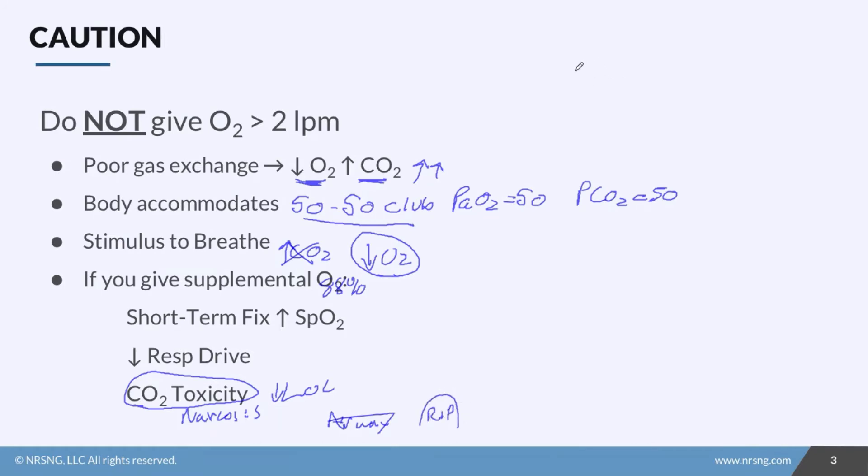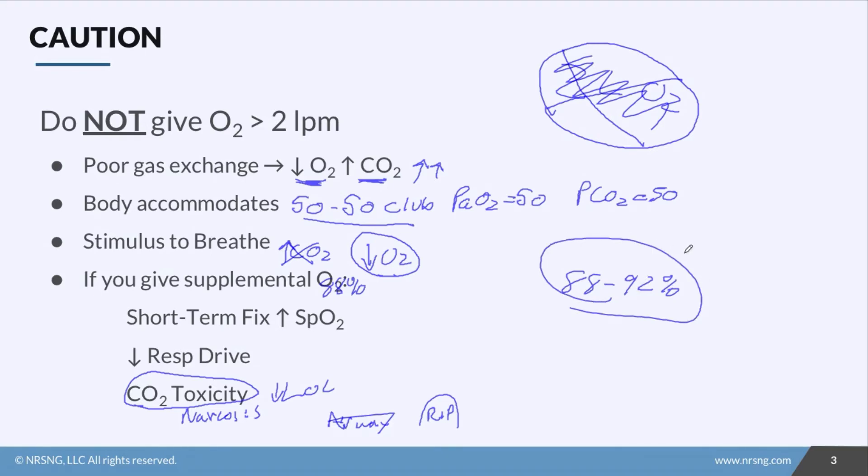Now here at NRSNG we love you guys. We want to see you advocating for these patients and keeping them out of harm's way. So do not give more than two liters of O2 to this patient without talking to the provider. In fact many times we'll see doctors actually order to keep SATs between 88 to 92. And they'll do this so we don't give too much oxygen. We don't over oxygenate the patient. If you remember nothing else about caring for a COPD patient please remember this.